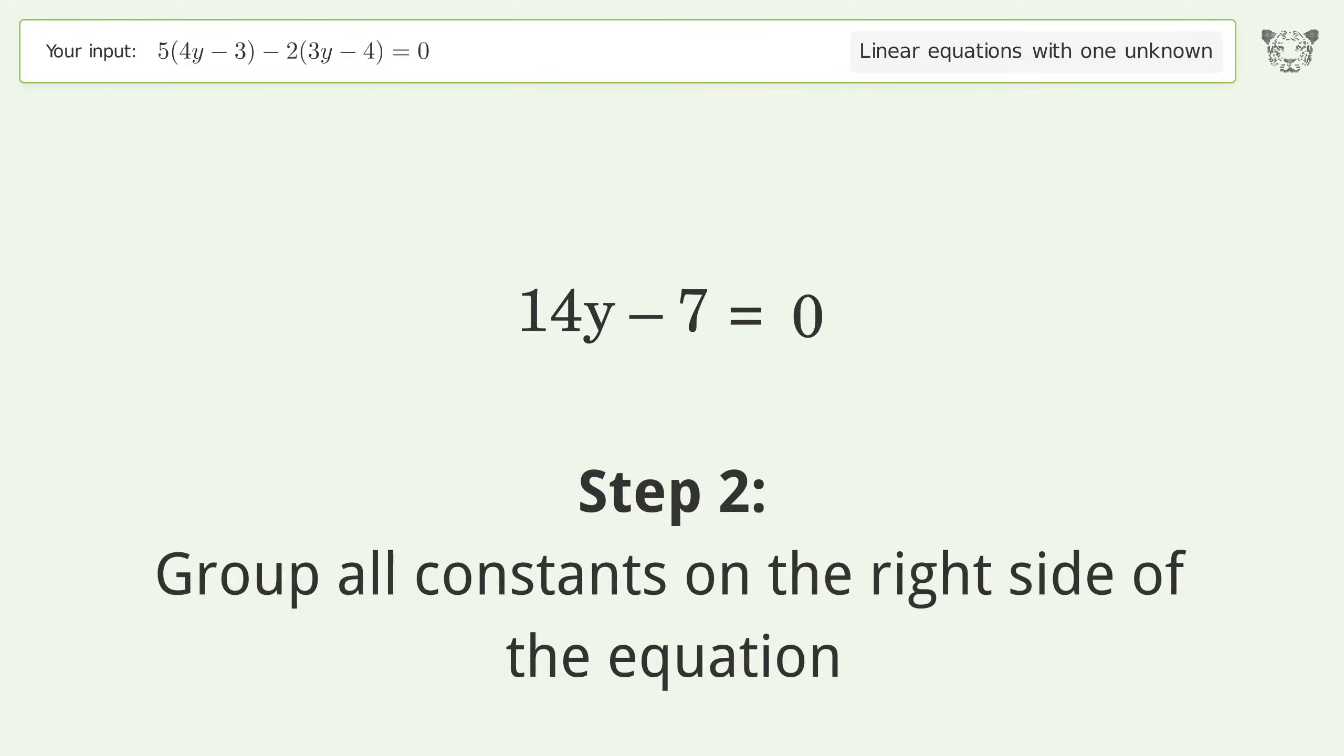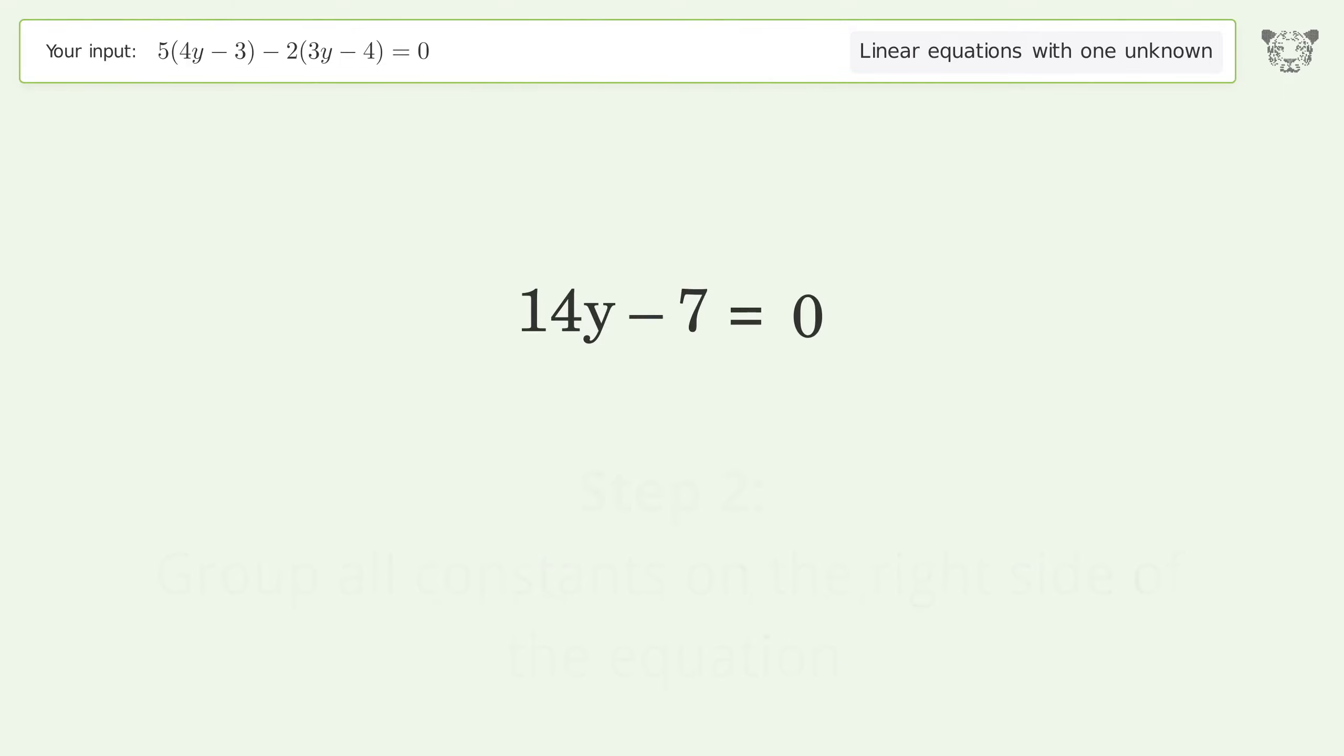Group all constants on the right side of the equation. Add 7 to both sides. Simplify the arithmetic.